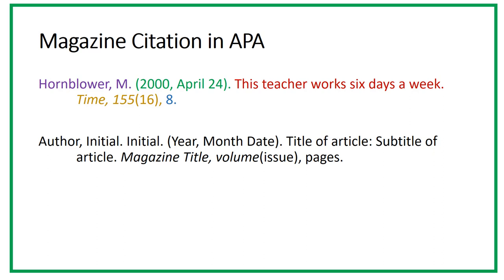The title and subtitle are separated with a colon, and only the first word and proper nouns are capitalized. The name of the magazine is in italics with all major words capitalized, and the volume number is in italics as well. The issue number follows immediately after the volume in parentheses but not in italics, then a comma and a space, then the pages of the article.